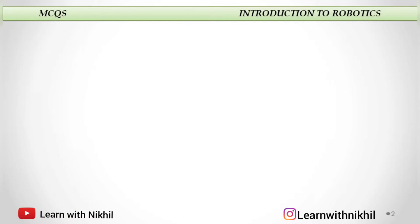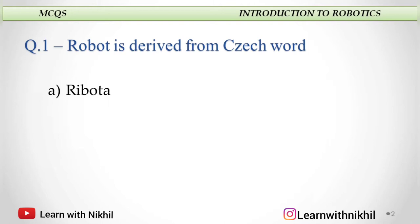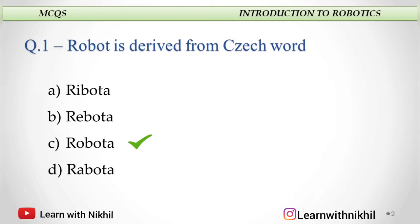MCQ 1: 'Robot' is derived from the Czech word. A. Ribota, B. Ribota, C. Robota, or D. Rabota. The right answer is Robota.